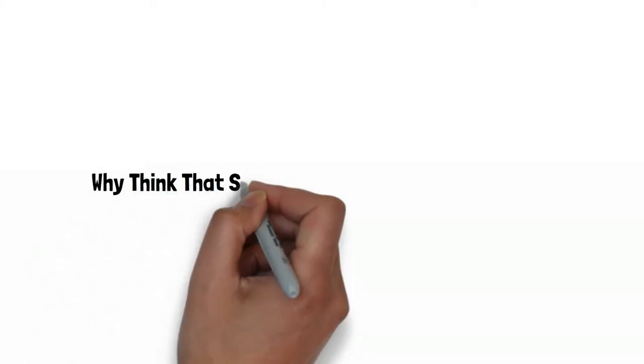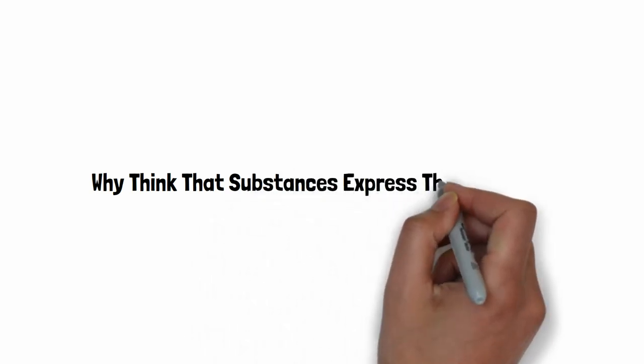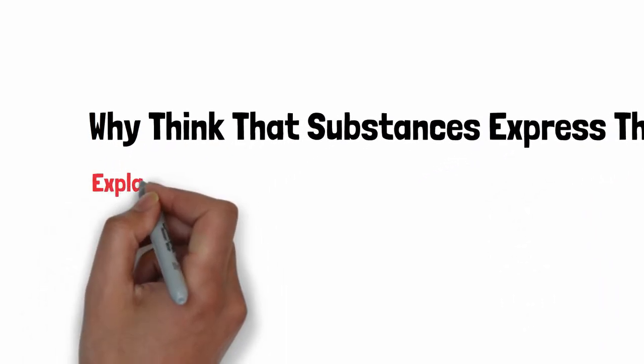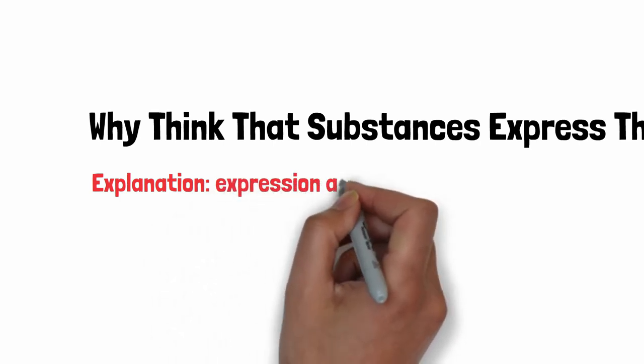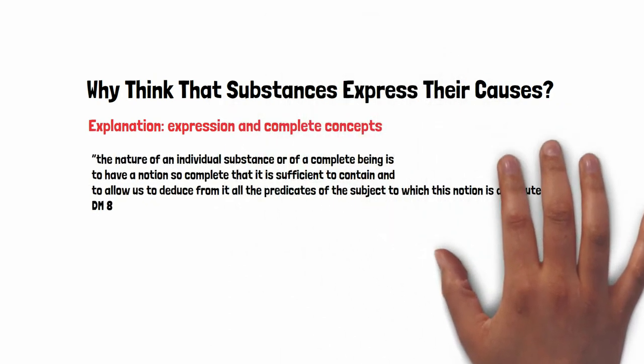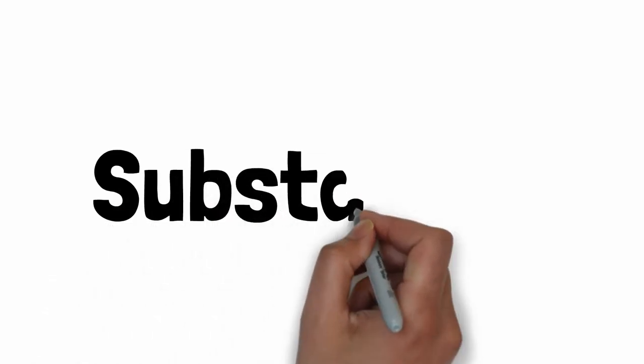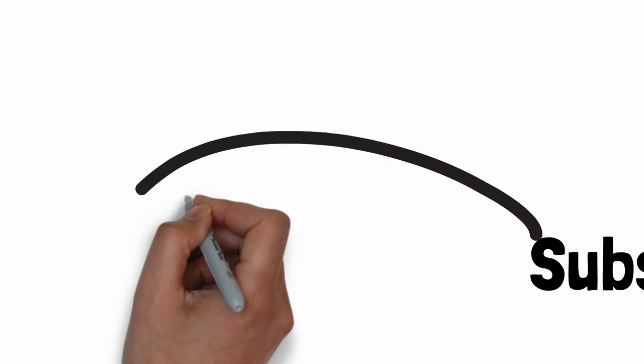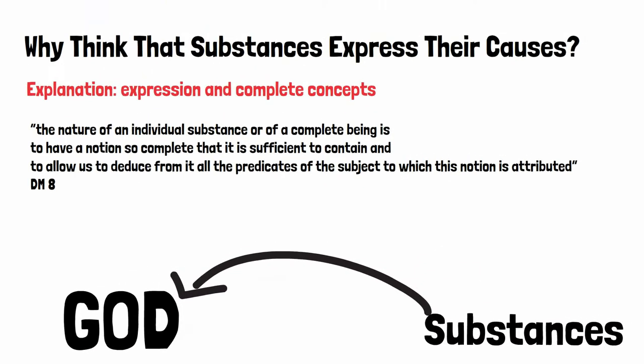Consider the views expressed in DM 8 about predication and complete concepts. Among the predicates attributed to individual substances, there will be some that relate it to God. Indeed, these will include predicates about the substances being an effect of God. Thus, by the view about concepts explained in DM 8, God's effect will be contained in the complete concept of every substance. Given the reasoning of DM 8, there will be marks and traces in each substance corresponding to this predicate. These marks and traces in the substance are naturally understood as the substances' representations of the things described by the corresponding predicates. So we can at least say that each substance represents God.